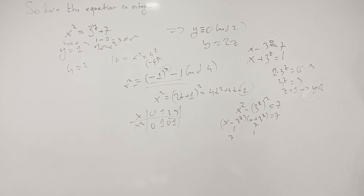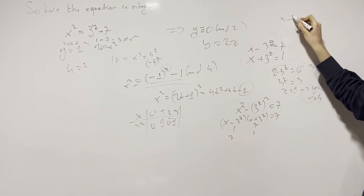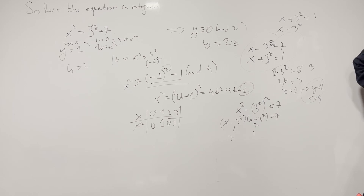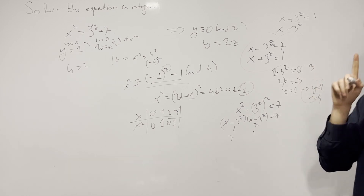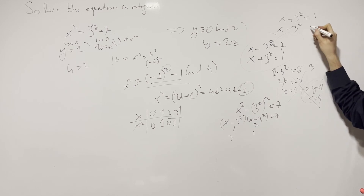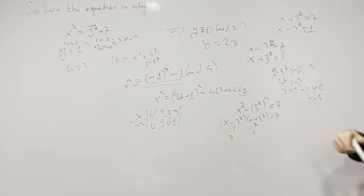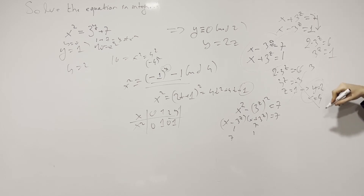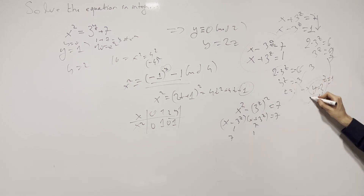So the first case gives y equals 2 and x equals 4, with the additional solution x equals -4. In the other case — x plus 3^z equals 1 and x minus 3^z equals 7 — when I subtract I get -6, so 3^z equals -3, which has no solution. So only the first case works. We confirm: z equals 1, y equals 2, x equals 4 (and x equals -4). That's how we solve the problem.